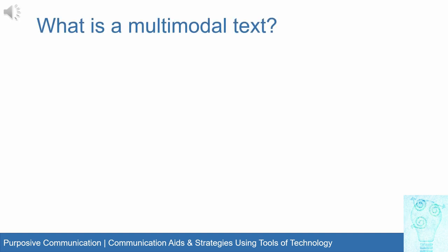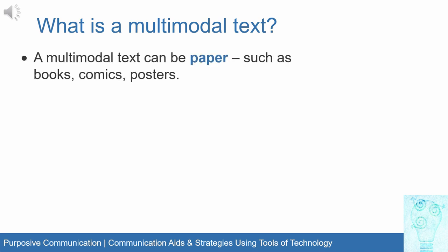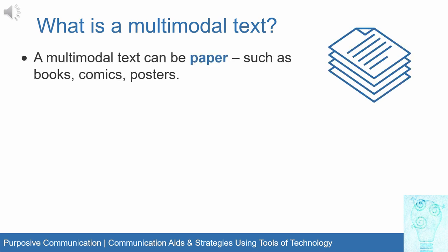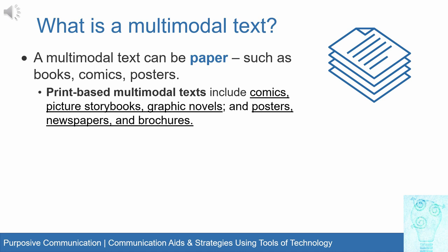What is a multimodal text? A multimodal text can be paper-based, such as books, comics, and posters, which combine written and visual modes. Examples of print-based multimodal texts include comics, pictures, storybooks, graphic novels, posters, newspapers, and brochures — so if you want to share information through print, these are examples you can choose or make.